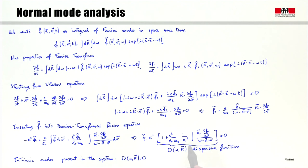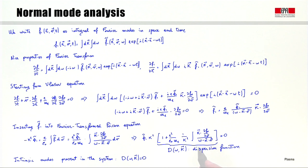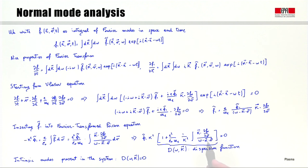One important note: in this integral there is a singularity when omega equals k times v — when the velocity of the particle matches the phase velocity of the wave, i.e., when particles are resonant with the wave. Dealing with this singularity is very difficult. We will avoid it here by considering a case where the distribution function f0 is equal to zero for particles with omega equal to k over v.